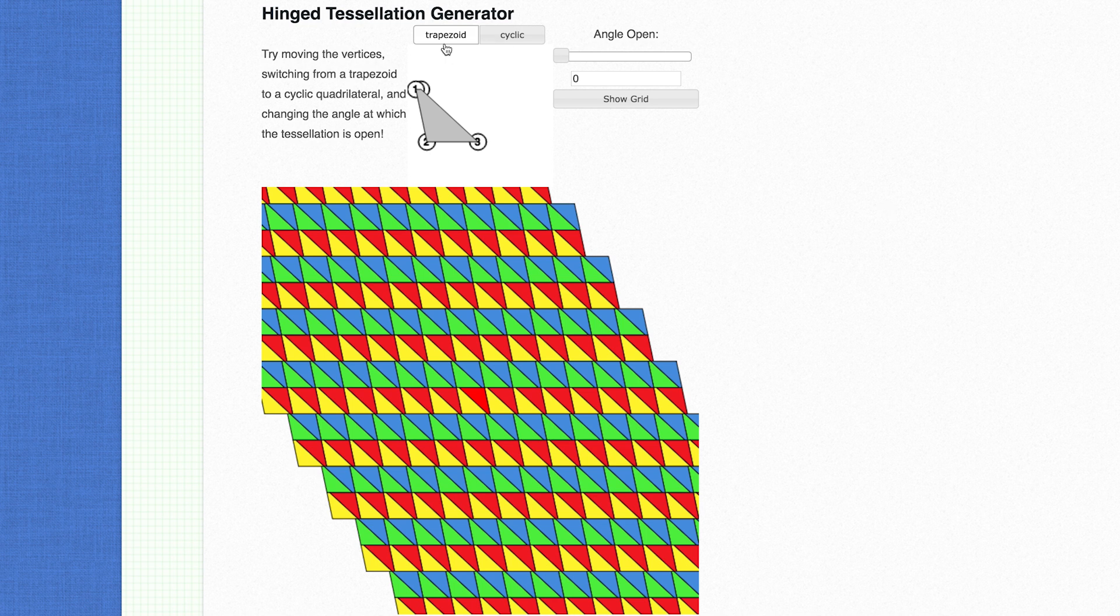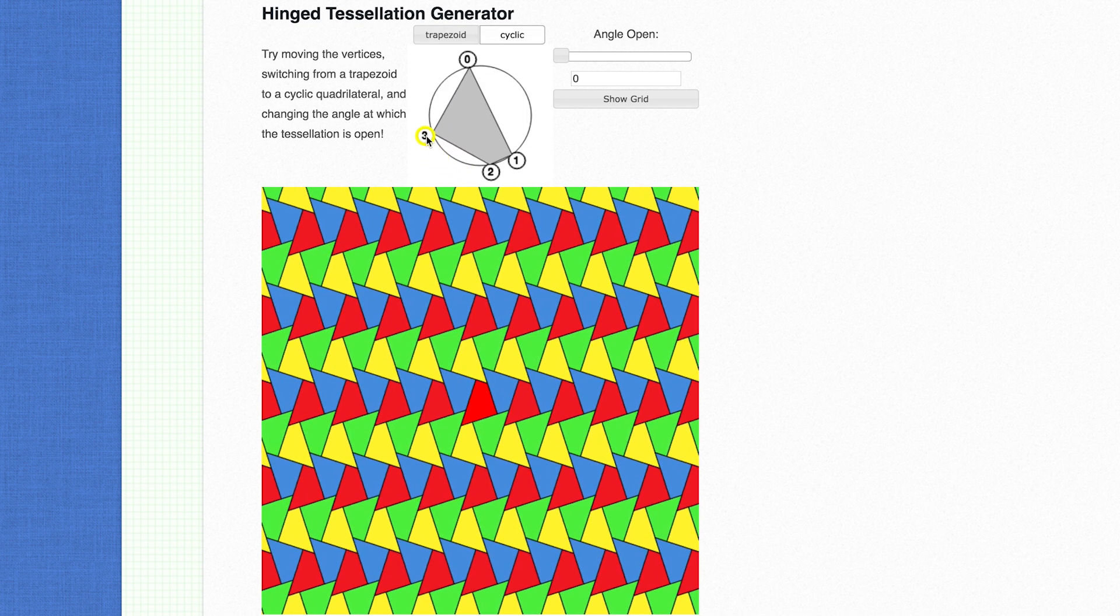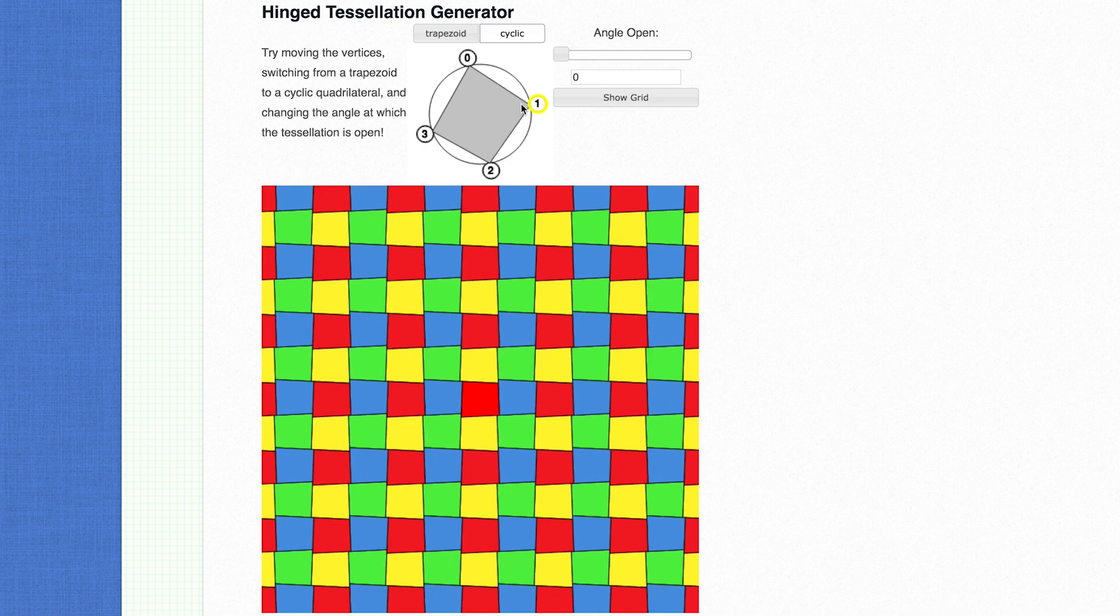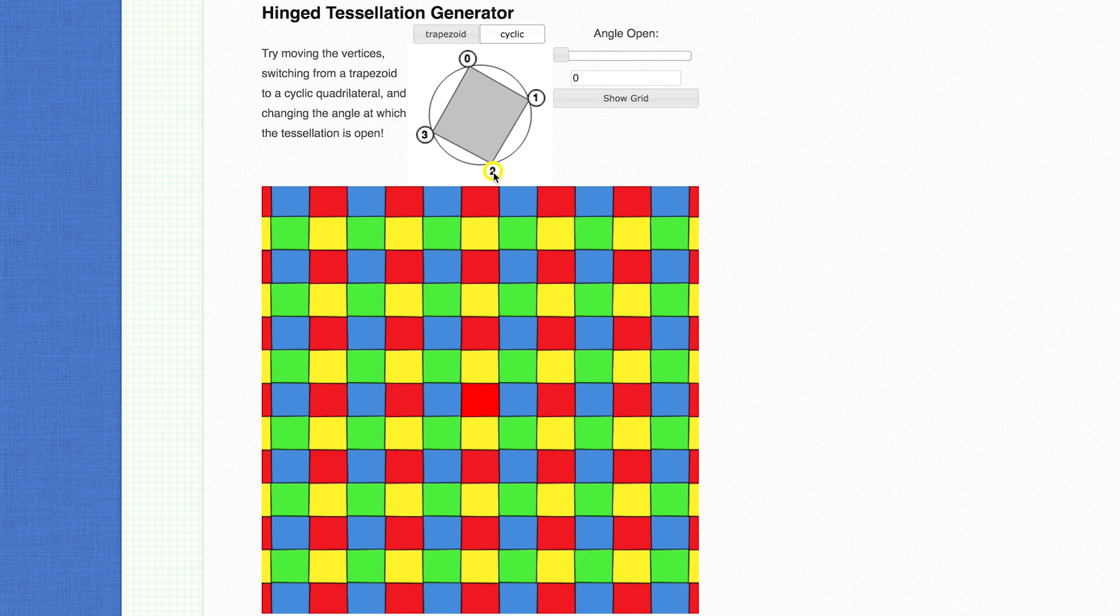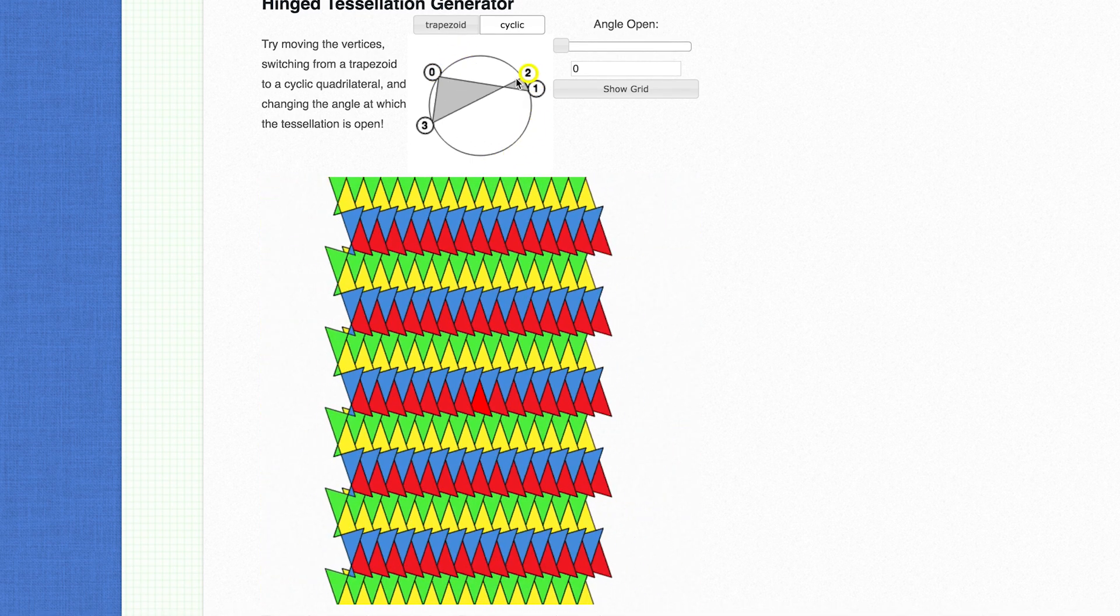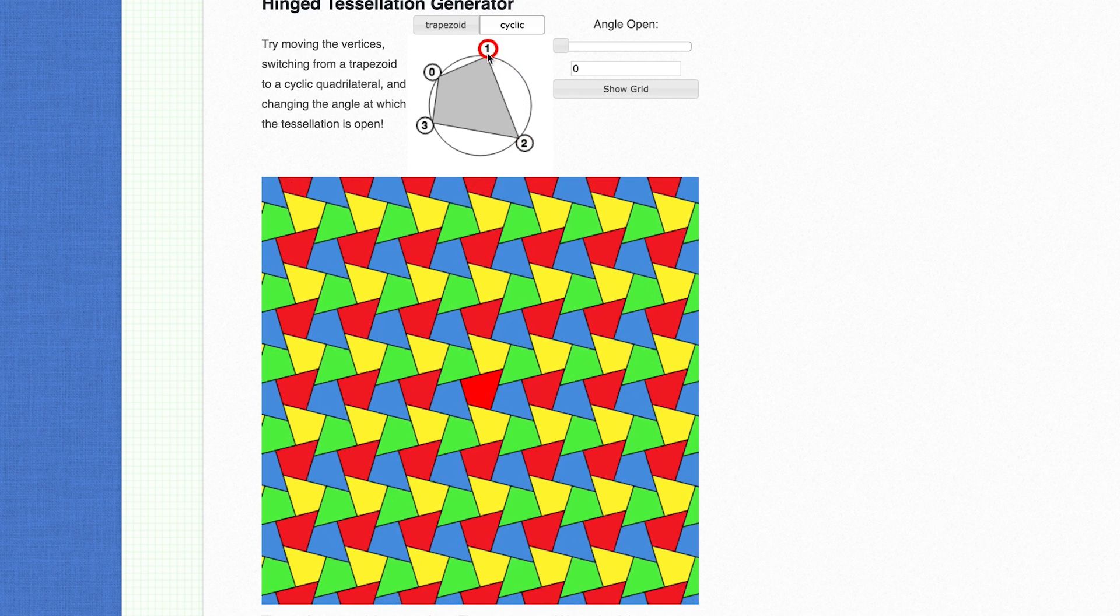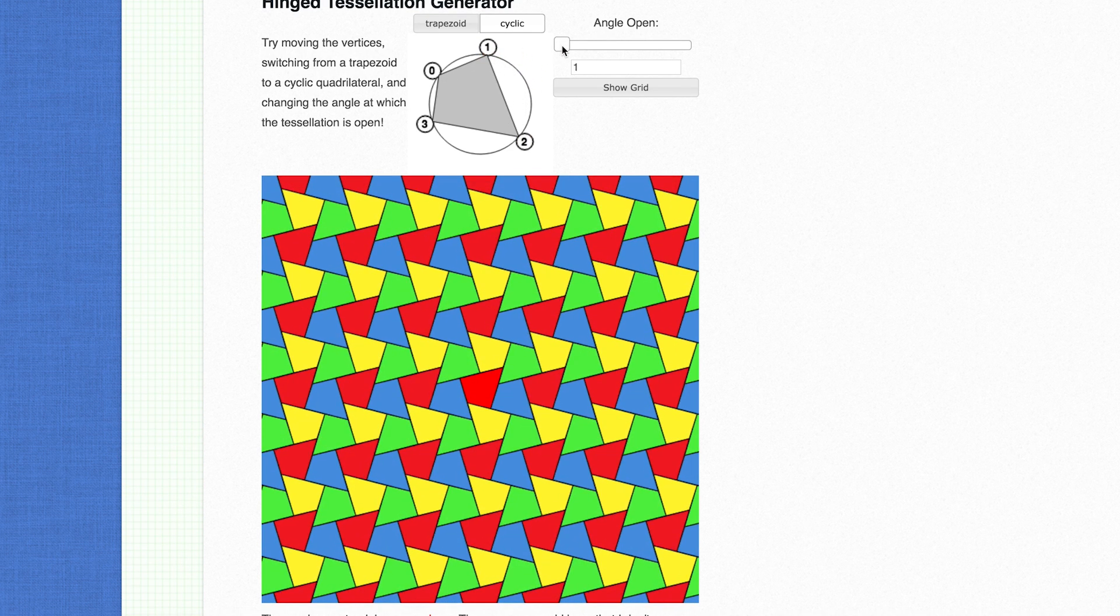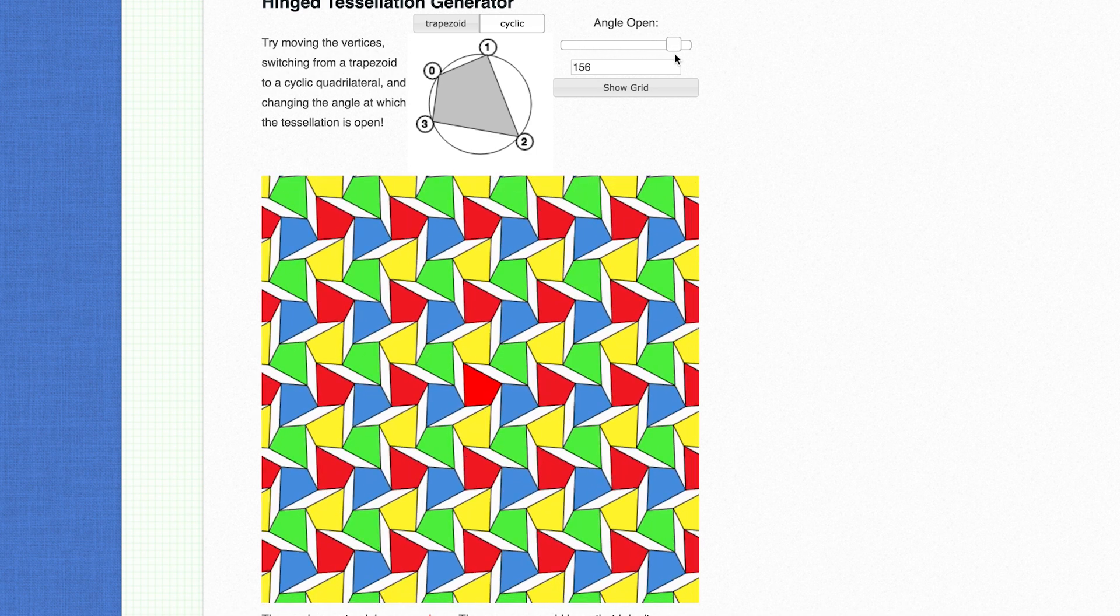I can choose between trapezoid and cyclic. Let's just do trapezoid, well, let's do cyclic first. A cyclic quadrilateral is one whose points all lie on a circle and I can choose where I put them. With a square, the result is quite trivial, but you can choose all kinds of nutty shapes. And then once you're happy with what you've got, go ahead and hinge them. And look, you have created a hinged tessellation. Great job.